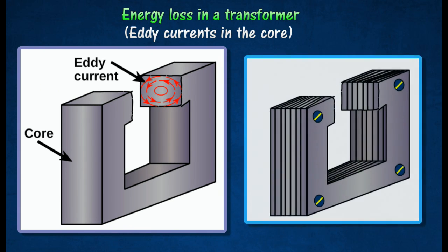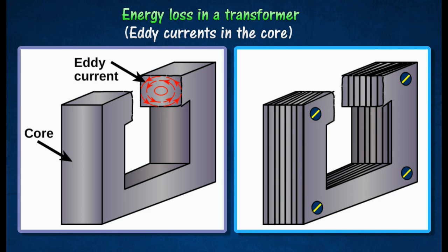Energy loss due to eddy currents can be reduced using a laminated core, which is made from thin sheets of soft iron insulated from each other to have high resistance. The high resistance will reduce the flow of eddy currents, and thus reduces the energy loss due to eddy currents in the core.